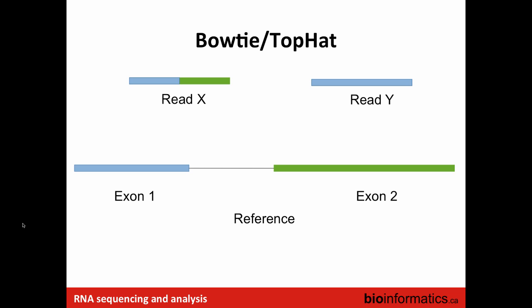Let's go through an example. Assume we have two reads, read X and read Y, and a reference with exon 1, intron, and exon 2. Read X spans two exons — exon 1 and exon 2 — but as a cDNA coming from mRNA, there is no intronic region in that piece. Read Y spans one exon. First, Bowtie tries to align all the reads to the whole genome. Anything that perfectly maps goes into an aligned bin; anything that partially maps goes into an unaligned bin, because those reads potentially span multiple exons.